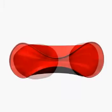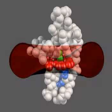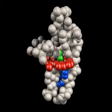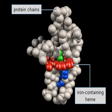Mature erythrocytes do not contain a nucleus or other organelles. The cytoplasm is almost entirely filled with hemoglobin, a red protein pigment containing iron. One erythrocyte contains about 280 million molecules of hemoglobin. This is why blood is red.